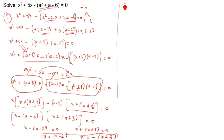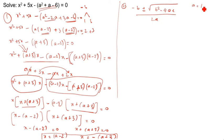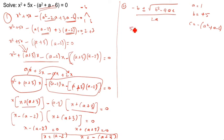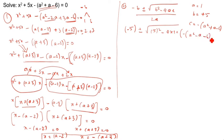We will now see the second method. The quadratic formula is: x equals minus b plus or minus root of (b squared minus 4ac), divided by 2a. What is a? a equals 1, since there is no coefficient before x squared. b equals plus 5. c equals minus (a squared plus a minus 6).